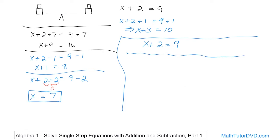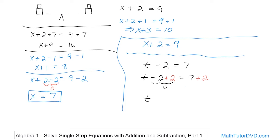Let's solve one more quick problem. What if we have t minus 2 equals 7? We want to get t by itself. t has a 2 subtracted from it, so to get t alone we do the opposite: this is subtraction, so we add 2 to both sides. On the left, negative 2 plus 2 gives 0, leaving just t. On the right, 7 plus 2 is 9. So t equals 9. You can verify: 9 minus 2 does equal 7.